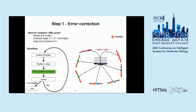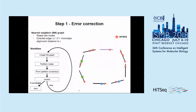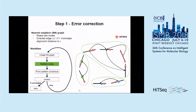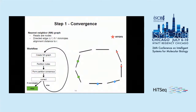We then form a consensus sequence of all reads in the partition and correct a fraction of the positions in reads that differ from this consensus sequence. After the first iteration, we have a set of partially corrected reads. We then create directed edges again in the second iteration, partition the nodes — which are more separated now — form consensus, correct a fraction of errors, and repeat until no read is unique anymore. At that point, we define convergence. In this example, we have gone from eight unique reads down to four unique candidates.